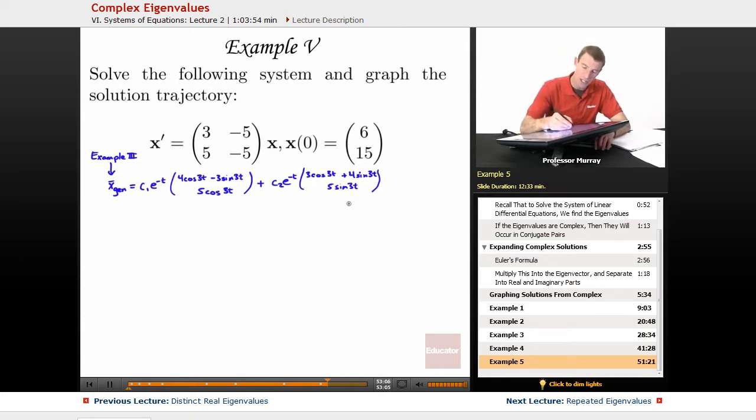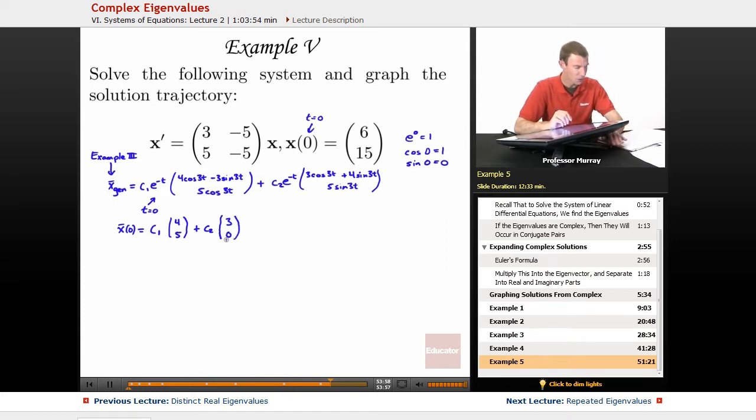What we're going to do is plug in t equals 0. Everywhere through here we're going to plug in t equals 0, and we're going to use the fact that e to the 0 is 1, cosine of 0 is 1, and sine of 0 is 0. So all the sine terms are going to drop out, all the cosine terms are just going to leave us with 1. So x of 0, plugging in 0 everywhere, gives us C1 times (4, 5) plus C2 times (3, 0), which is supposed to equal (6, 15).